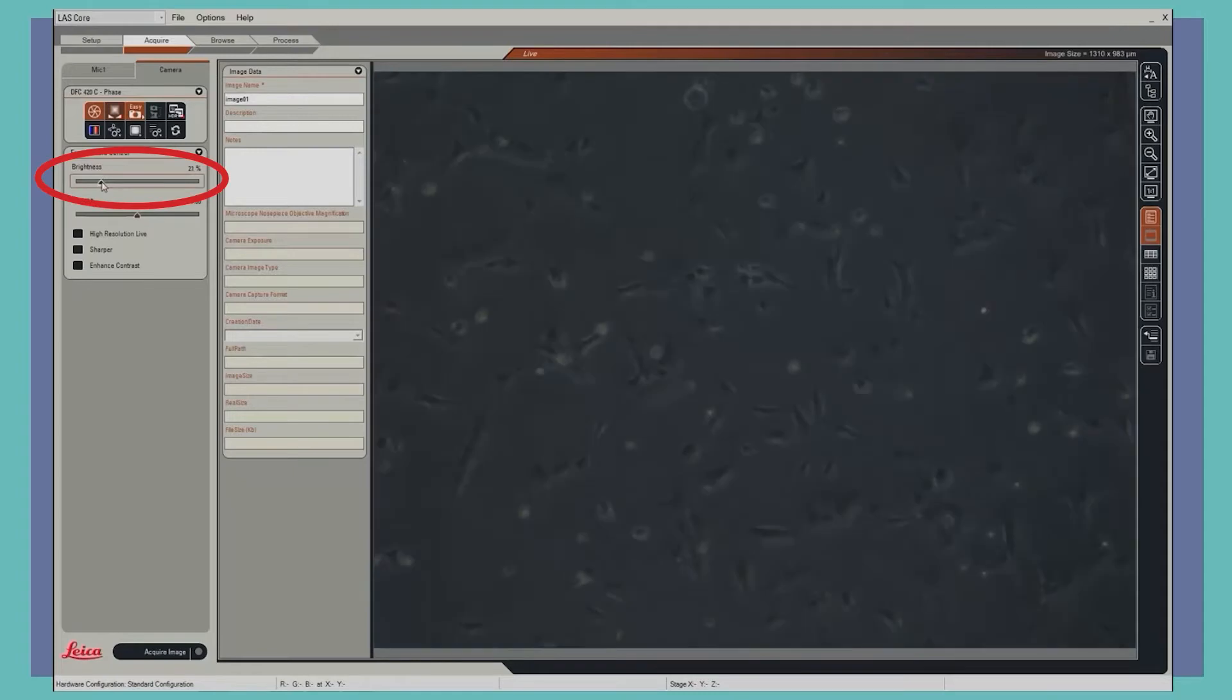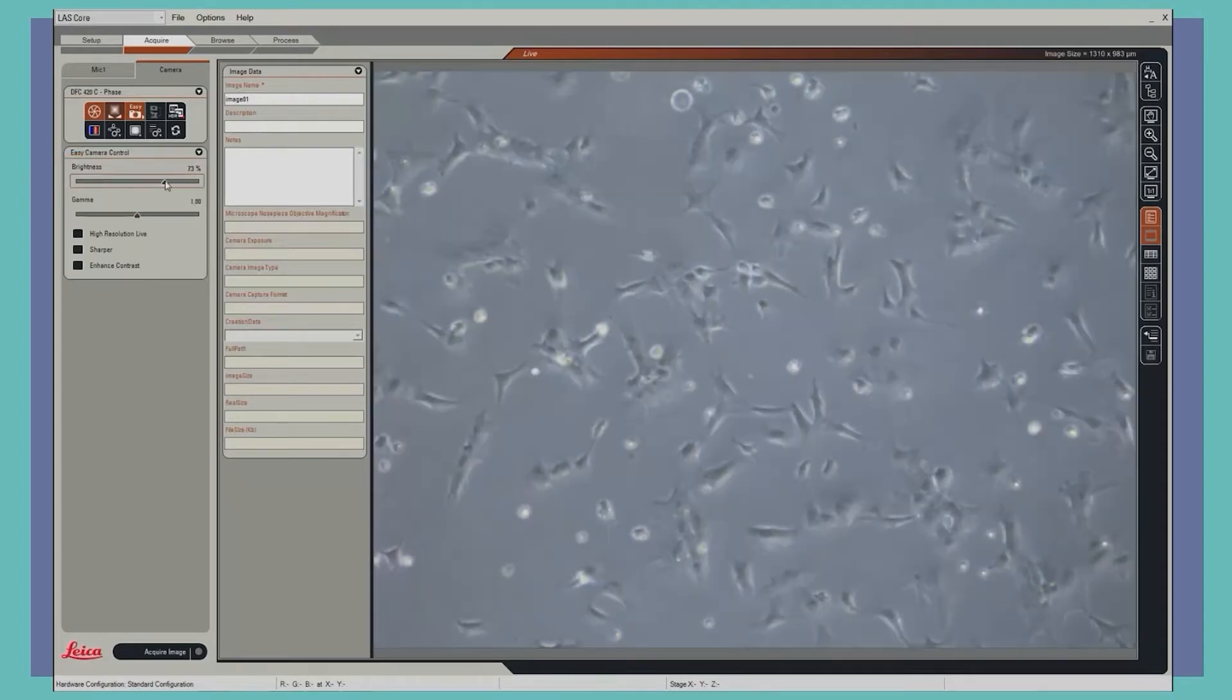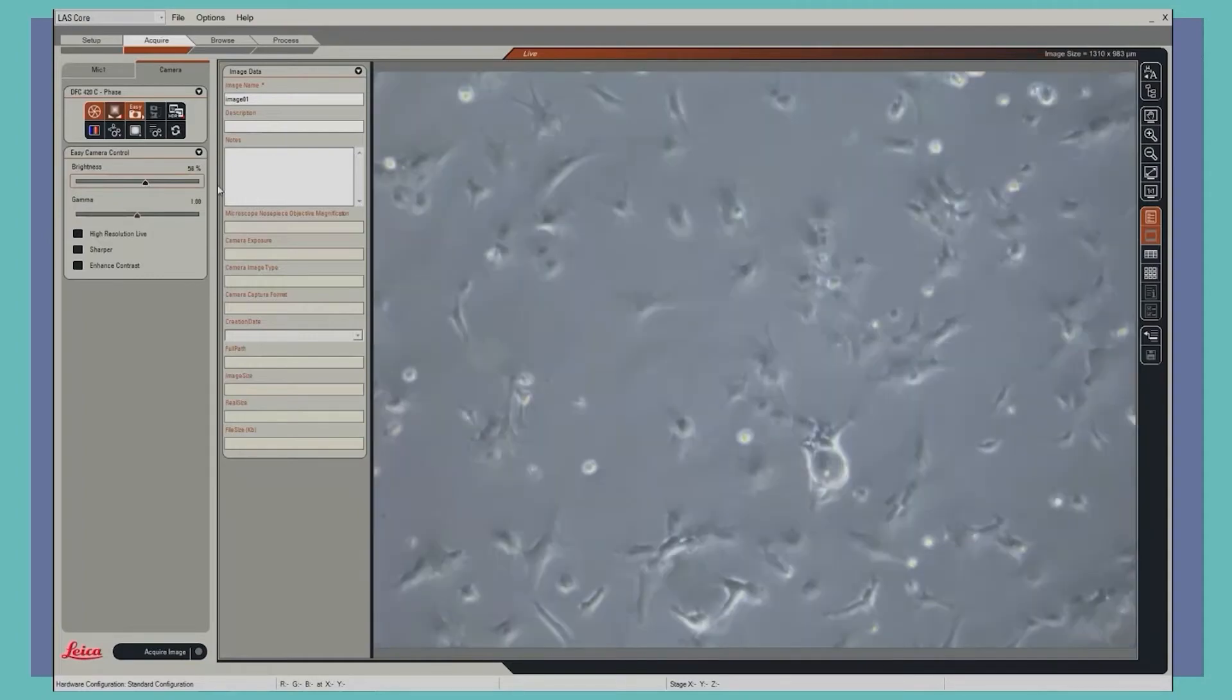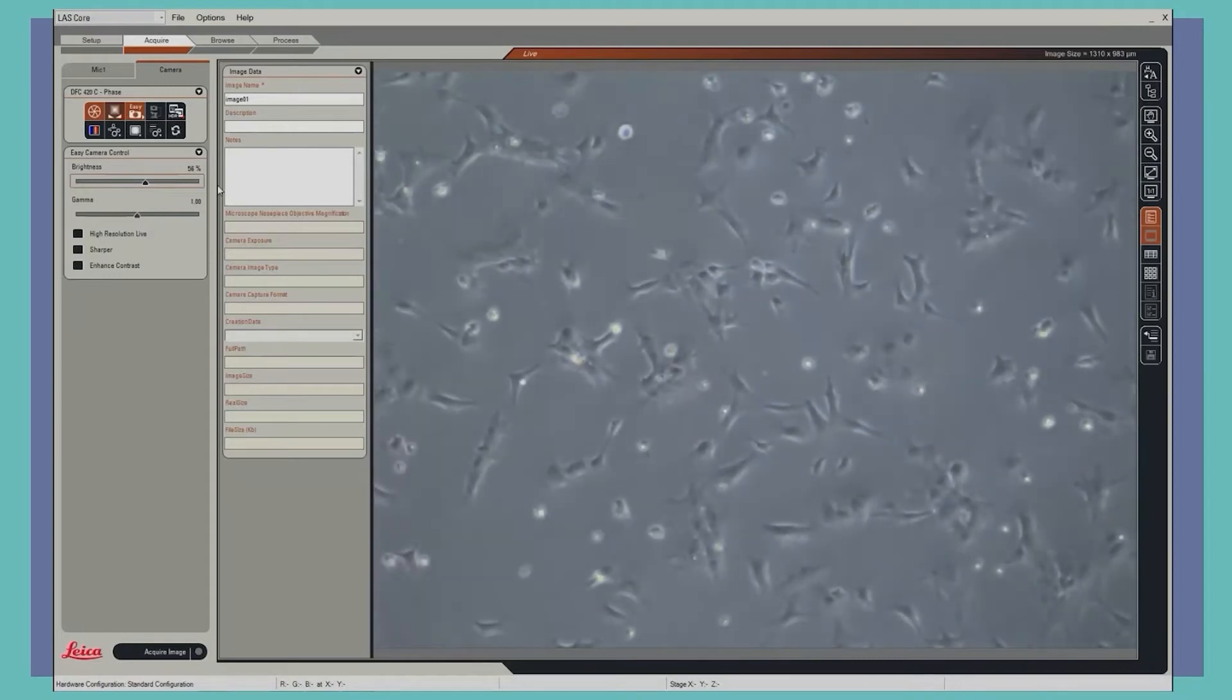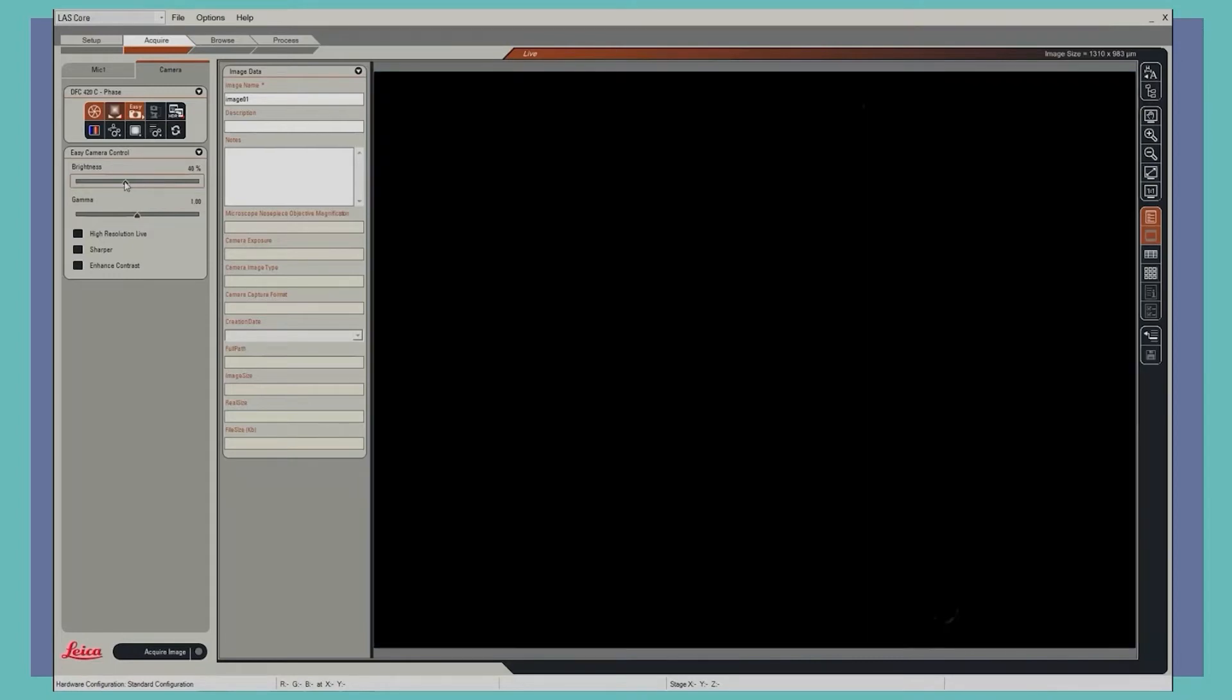We can also adjust the brightness of our image on the interface or the microscope. This helps us visualize different regions. You can also move the stage as shown previously to look at different regions of interest around your cell culture.